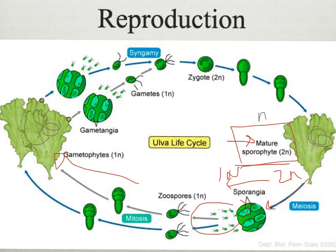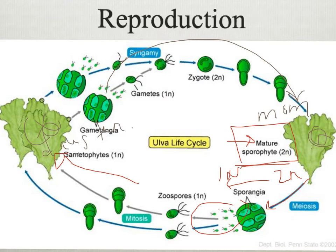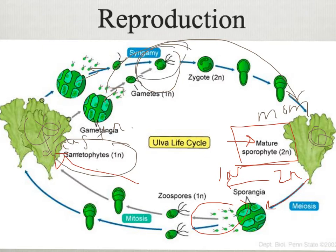If this was mom and mom is diploid, then this would be the daughter, who is haploid. Then the grandchildren would be back to diploid. So every other generation: haploid, diploid, haploid, diploid. The gametophyte is 1N, and the gametangia makes gametes that are 1N. They fuse together — again using syngamy — and as we undergo fertilization, fusing two individuals into the zygote, the zygote then grows by mitosis and forms the mature sporophyte.